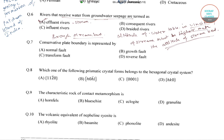The correct answer is option number C, that is transform fold. Conservative plate boundaries, also known as conservative margins, are also known as transform faults. These transform faults are mainly found on ocean floors, where they offset mid-ocean ridges.